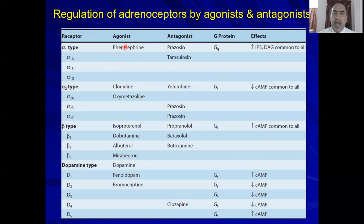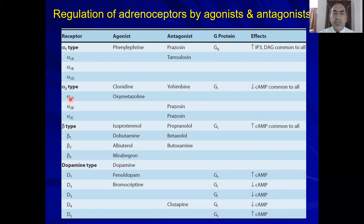For alpha-2 receptors: the agonist is clonidine and the antagonist is yohimbine. They are all Gi protein-coupled receptors. Activation of alpha-2 inhibits adenylate cyclase, leading to a decrease in cyclic AMP. A selective agonist on alpha-2 is oxymetazoline, selective for alpha-2B and alpha-2C.